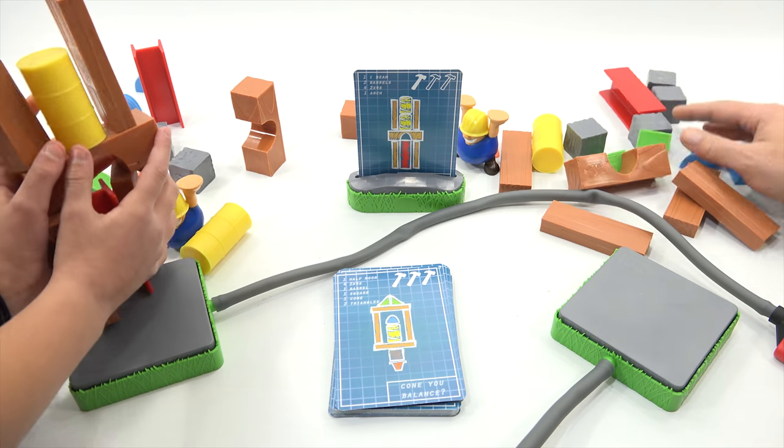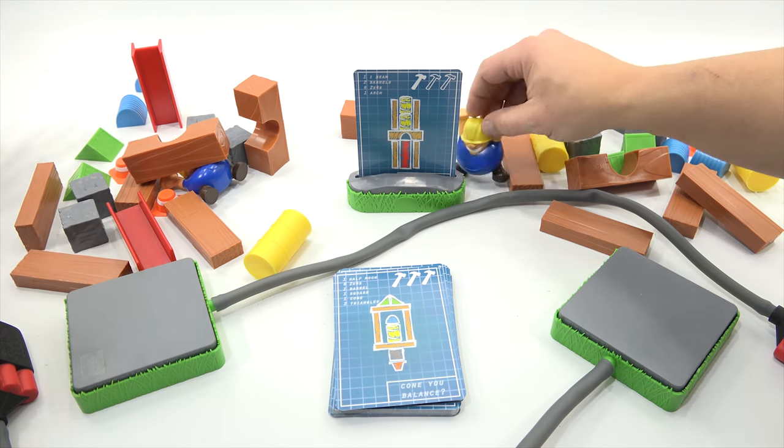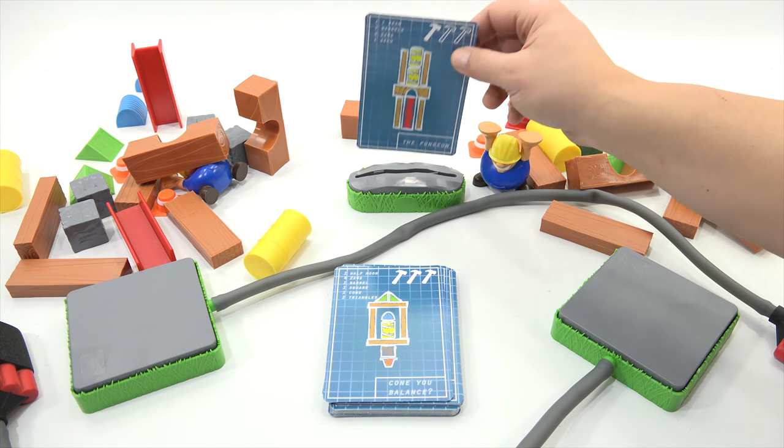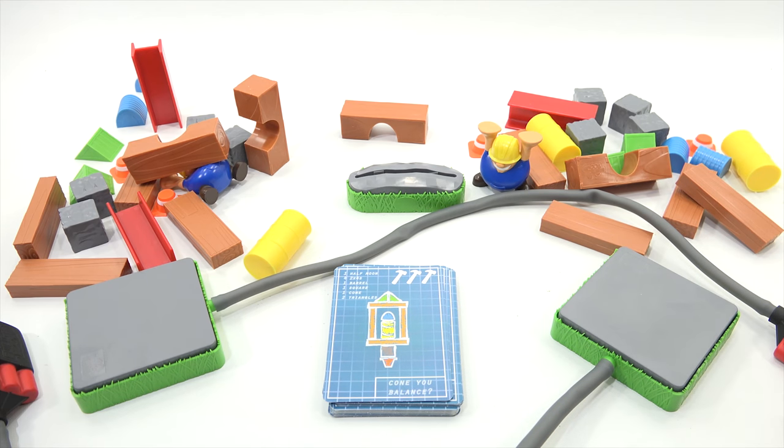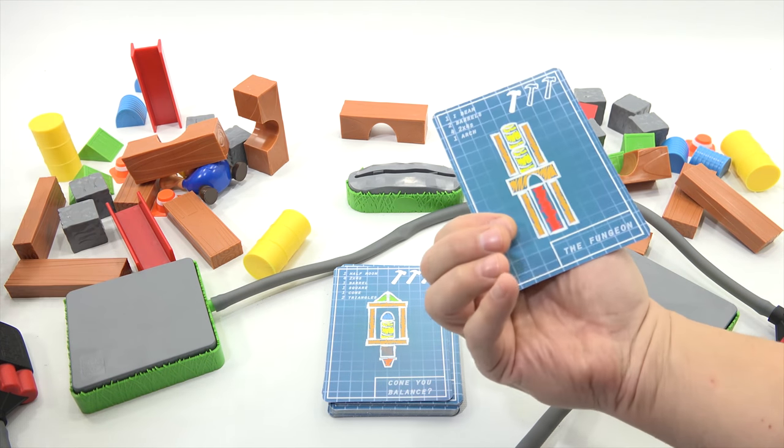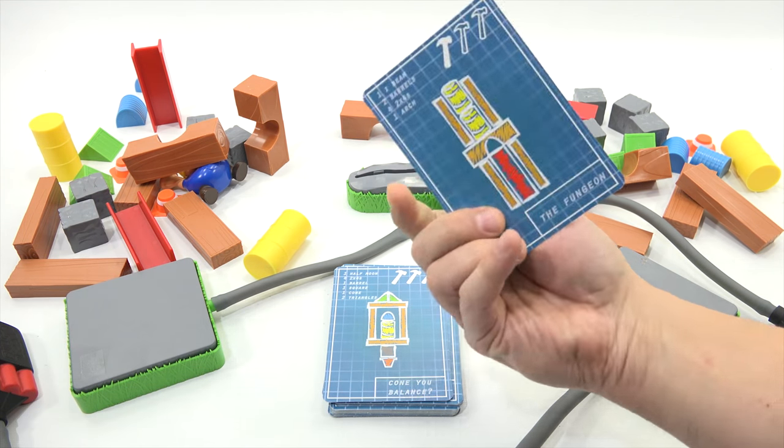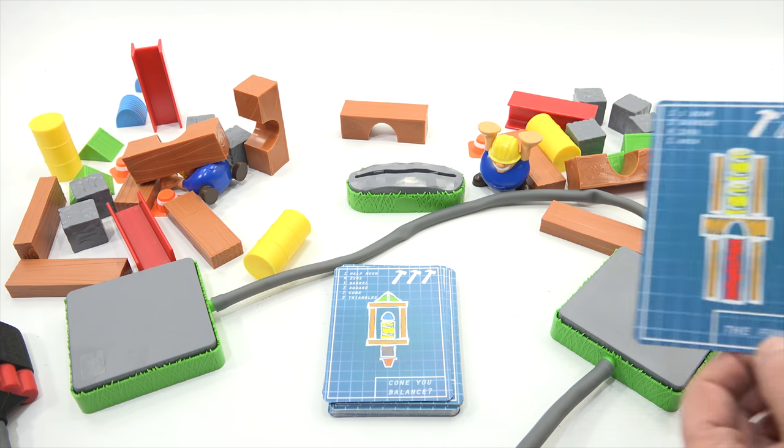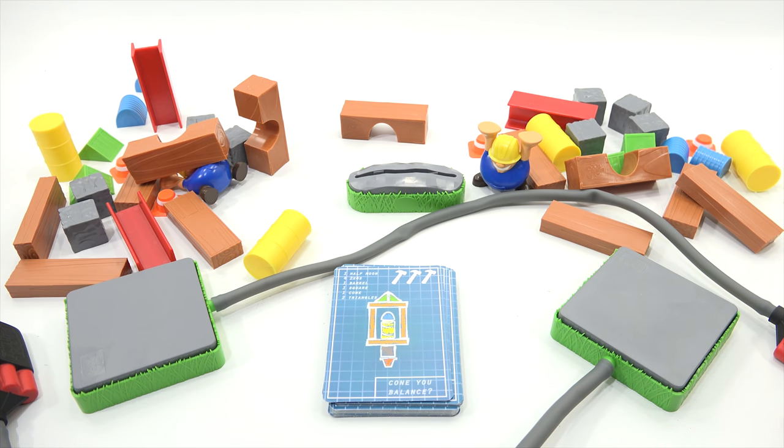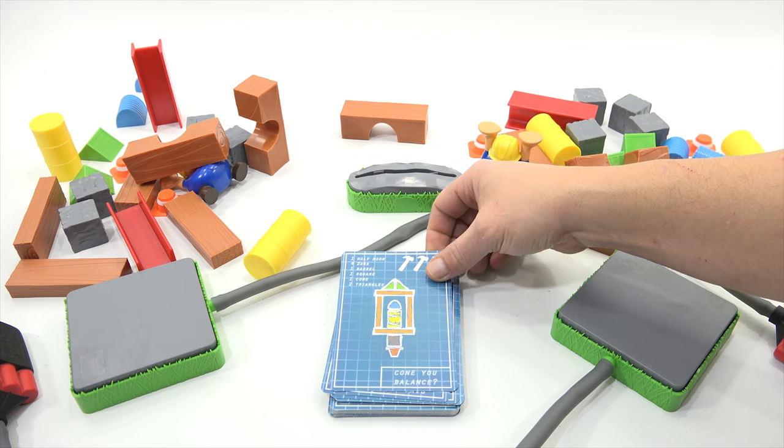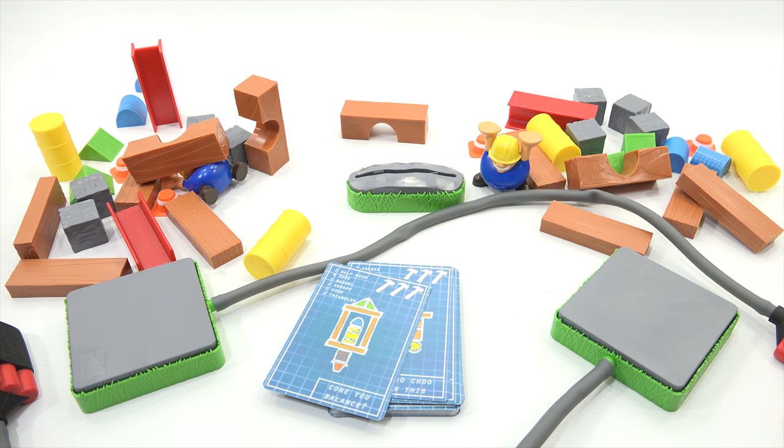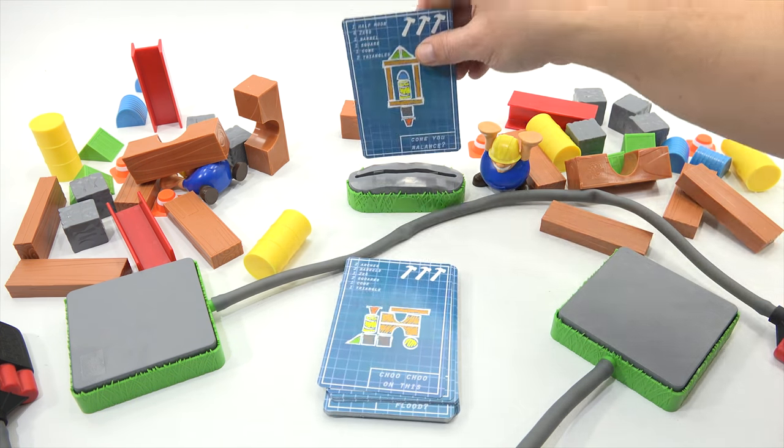All right. I'm going to put all that back in. All right. Now, they don't all have the little guy, but a lot of cards do. Yes. And it looks like it's the same on both sides, doesn't it? Oh, yeah. It's called the fungin. Cone you balance. Ooh, that one is a three. Should we try it? It's going to be hard. I guess we can. All right. Let's put it in.